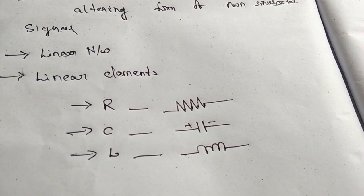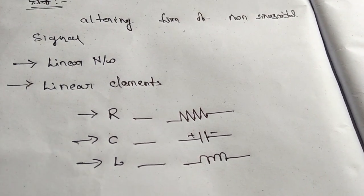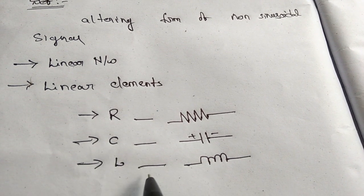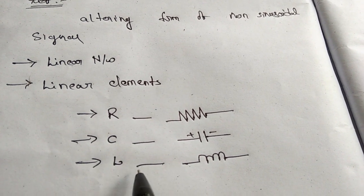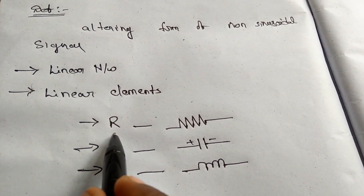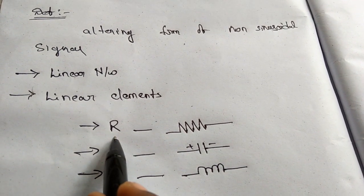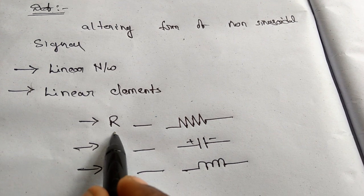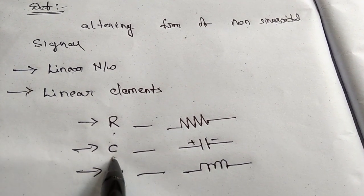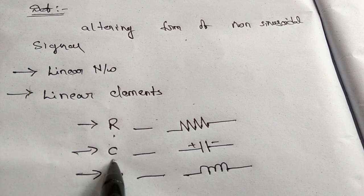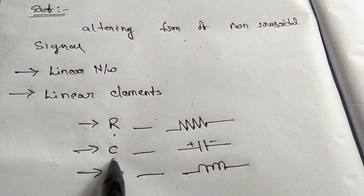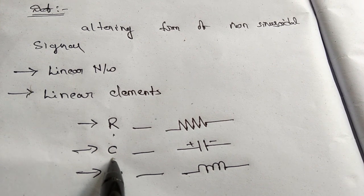Now let me tell you what is Resistance, what is Capacitance, and what are Inductors, and their units. Resistance is the property of the element which opposes the flow of current, and the units are Ohms. Capacitance is the property to store energy in the form of an electric field, and the units are Farads.